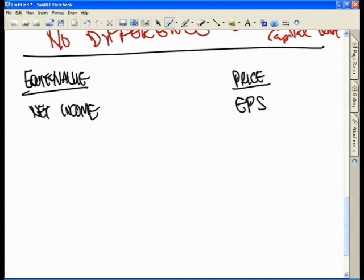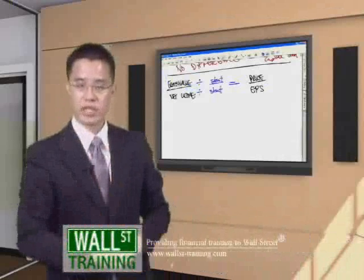What must you do to both numerator and denominator to arrive at this calculation? You will first divide both numerator and denominator by shares outstanding. When you divide equity value by shares outstanding, you get the price per share. You divide net income by shares outstanding, you get earnings per share. But now the question I'm going to ask you is the following.